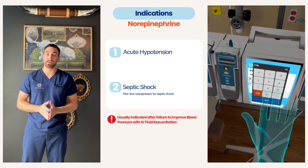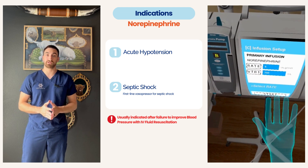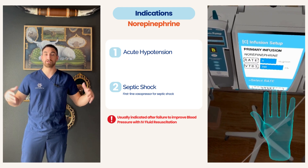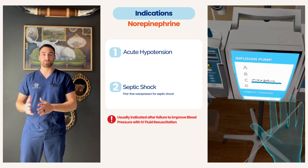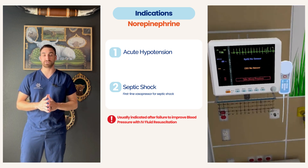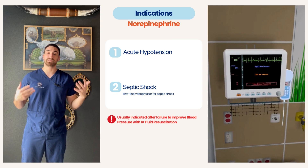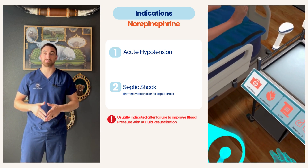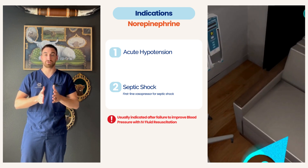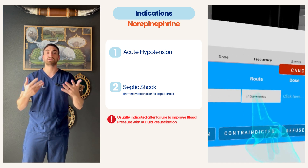Why would we start a norepinephrine drip? It's typically indicated for severe hypotension not responsive to fluid resuscitation. When a patient has severe hypotension, our first intervention is fluid resuscitation to increase vascular volume and raise blood pressure. If that doesn't work, we go to a vasopressor — norepinephrine is typically the first-line choice, depending on the patient's pathophysiology. We need to constrict those vessels so blood can actually propel to the organs properly, rather than failing to circulate due to dilated, unconstricted vessels.